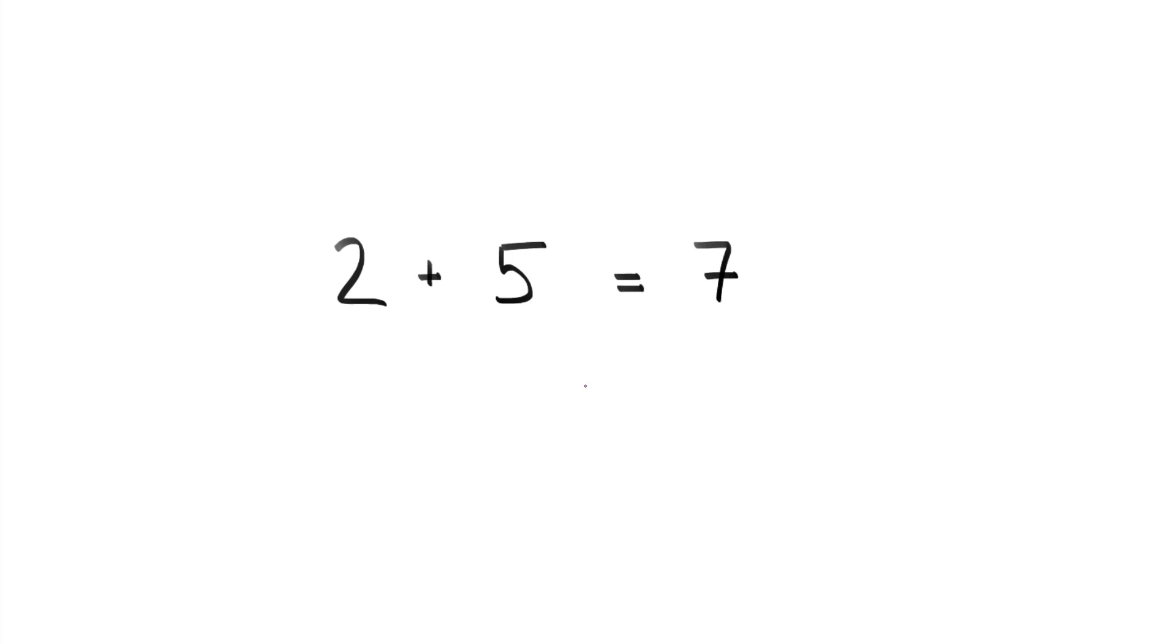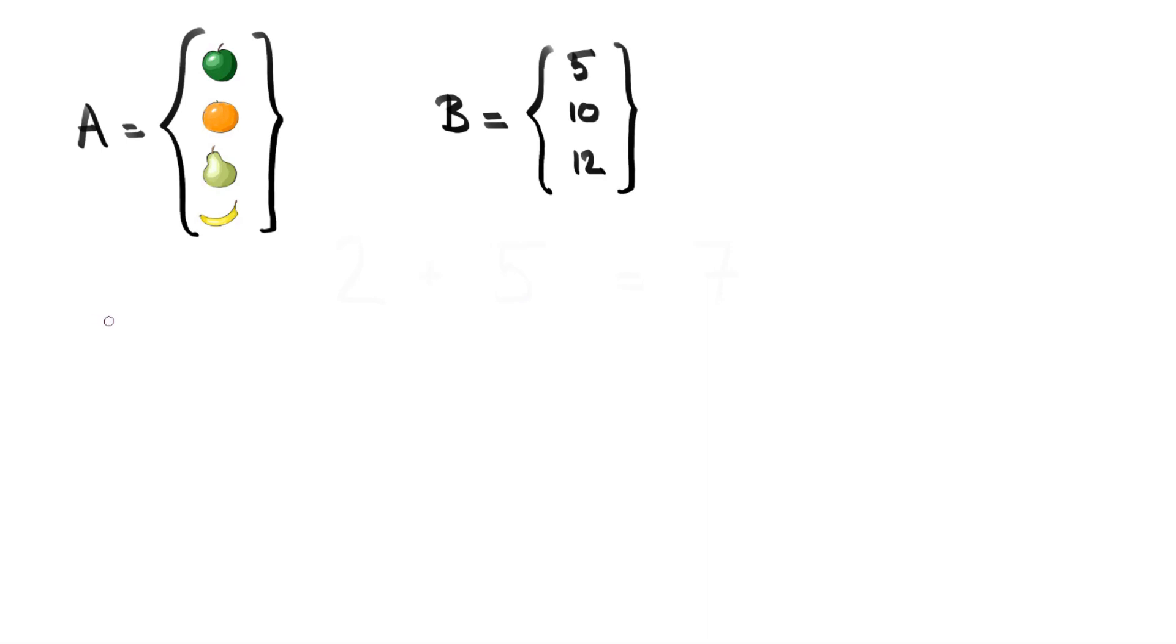So how do we go about doing this? Well, let's see. Let's go back to a set that I've used a few times now, and that's the set of different kinds of fruit. Let's call it set A, and A contains apple, orange, pear, and banana. And now we're going to define another set, a set called B. Let's say B contains the numbers 5, 10, and 12. And the set that contains pairs of elements, one from A and one from B, is called the Cartesian product of A and B. It's written down as A times B, but we actually pronounce it A cross B.